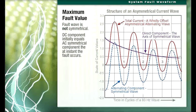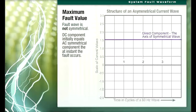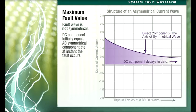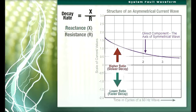In a theoretical system with zero resistance, the DC component of fault current would remain a constant value. However, in an actual system where resistance is present, the DC component decays to zero as the stored energy it represents is expended in the form of I²R heat loss in the resistance of the system. The rate of decay of the DC component is exponential and is a function of the reactance-to-resistance ratio, X over R, of the system from source to fault. The lower the X over R ratio, the more rapid is the decay of the DC component.